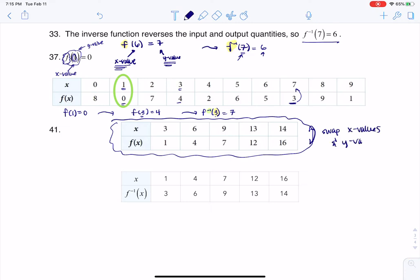So all you see me doing here is I took all of our previous y values, like 1, 4, 7, 12, and 16, and I made that my new domain. And I took my initial domain, 3, 6, 9, 13, 14, and made that my range. And that's all there is to going between an original function and an inverse.